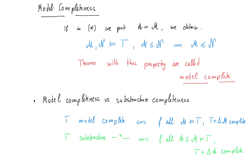Compare this once more to substructure completeness. Here we have that for any substructure of a model of T, T plus the simple diagram is complete. So you immediately see that substructure completeness implies model completeness, but not necessarily the other way. The question is now: is there something we can add on to model completeness to get substructure completeness, and hence quantifier elimination? In the following, we will see that for certain algebraic theories, there is such a criterion we can add on to model completeness to get quantifier elimination.